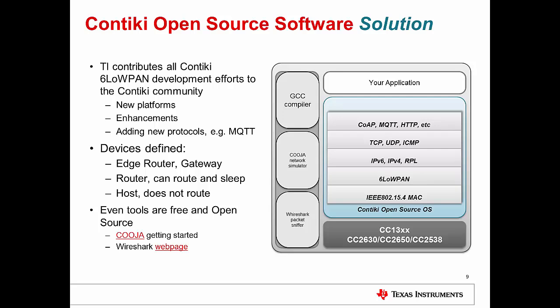Let's now talk in detail about how the Contiki open-source 6LoWPAN-based solution looks like overall. You have a physical layer based on CC13XX, CC26XX, or CC2538 radios. On the physical layer you have the IEEE 802.15.4 MAC. On top of that, you have the 6LoWPAN abstraction layer, which provides addressing of individual LoWPAN nodes to the upper layers of the application.